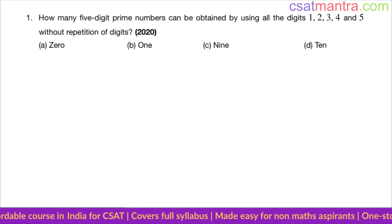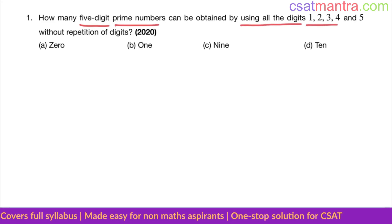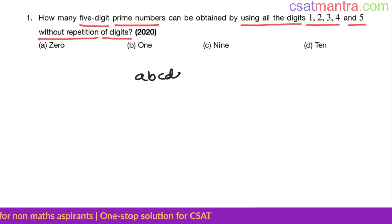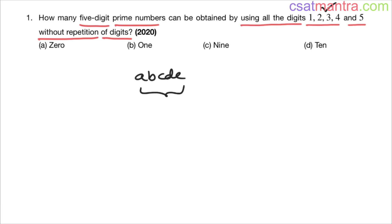Now let's solve this question: how many five-digit prime numbers can be obtained by using all the digits 1, 2, 3, 4, and 5 without repetition of digits? Let's say A B C D E is a five-digit number, where A can be any one of these five digits, and similarly B, C, D, and E — with no digit repeated. We want this number to be prime.